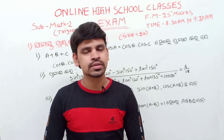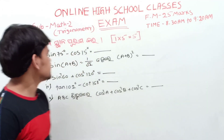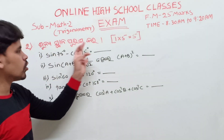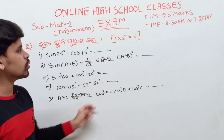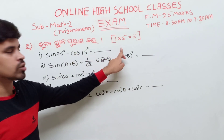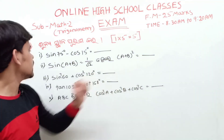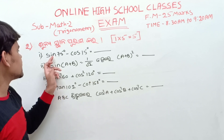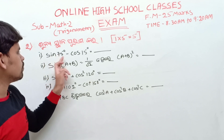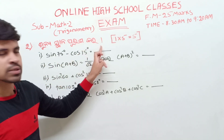The next section is objective questions. Each question carries 1 mark, 1 into 5 is 5 marks total. Question: sin 75 degree minus cos 15 degree equals dash.